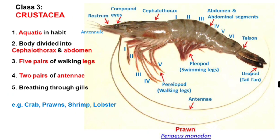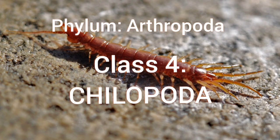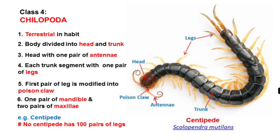Class 3 is Crustacea. Animals belonging to Crustacea are aquatic in habit. The body is divided into cephalothorax and abdomen. They have five pairs of walking legs and five pairs of swimming legs. They have two pairs of antennae. Breathing occurs through gills. Examples are crabs, prawns, shrimp, and lobster.